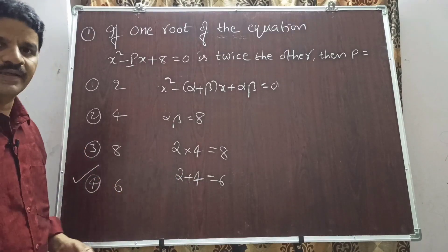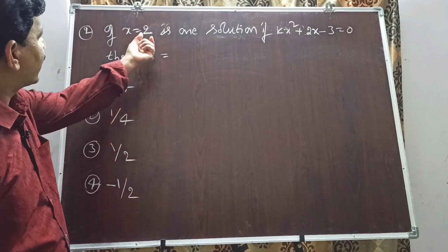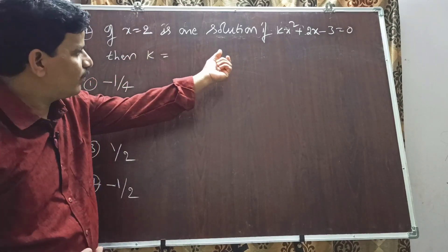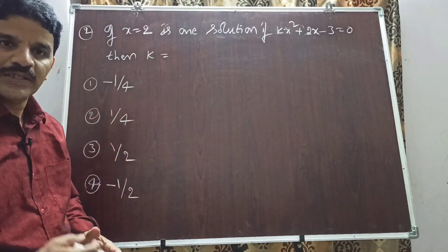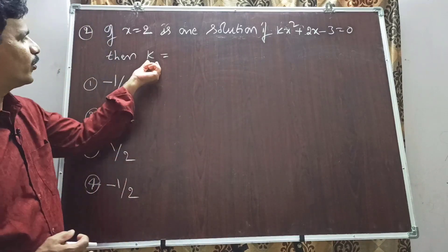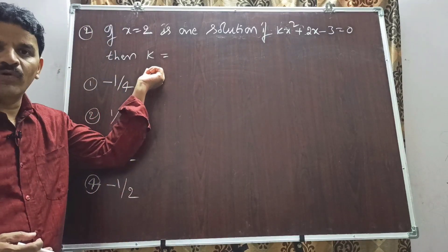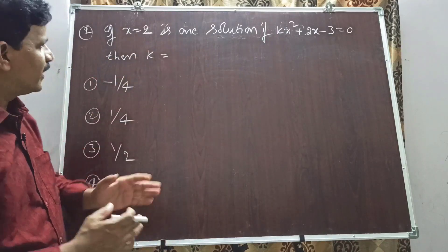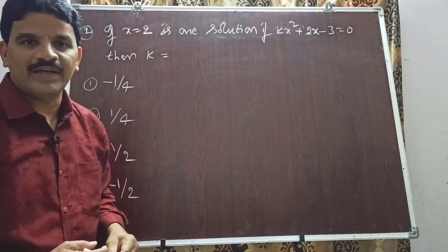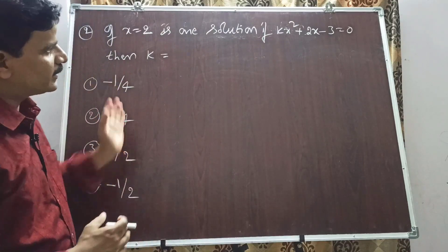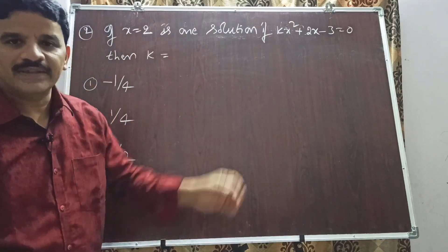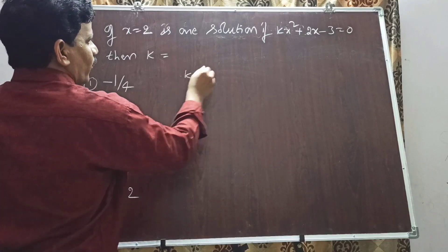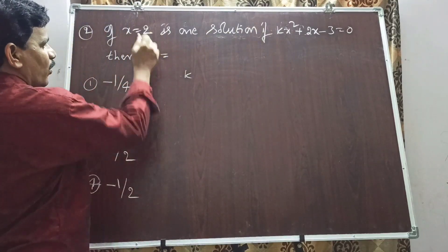Question 2: If x = 2 is one solution (one root) of kx² + 2x - 3 = 0, then k equals how much? Since x = 2 is a solution, it must satisfy the given equation. Therefore, substitute x = 2 directly into the equation to get the answer: k×(2²) + 2×2 - 3 = 0.